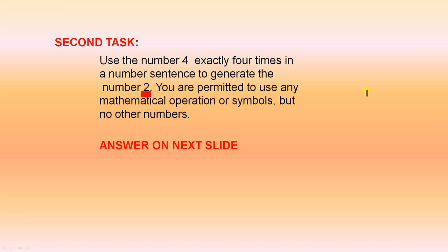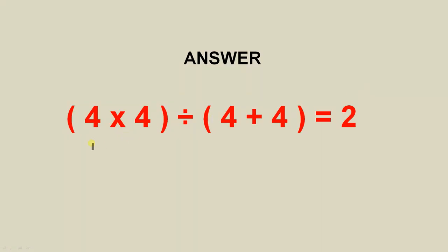So I'll move on now and we'll have the answer on the next slide. So if you have 4 times 4 and you divide that by 4 plus 4, so that here really is 16 and if you divide that by 8, so 16 divided by 8 gives you 2. So there's the answer to the puzzle.